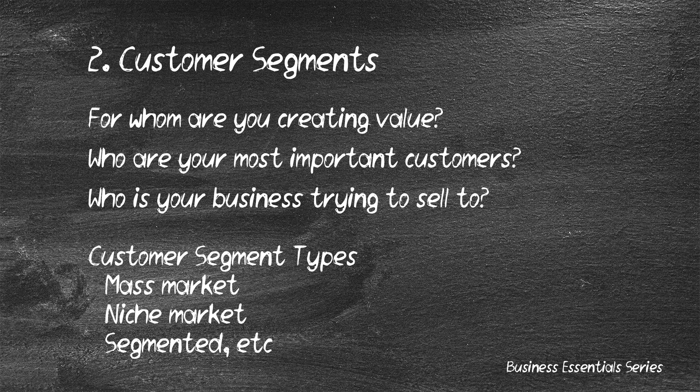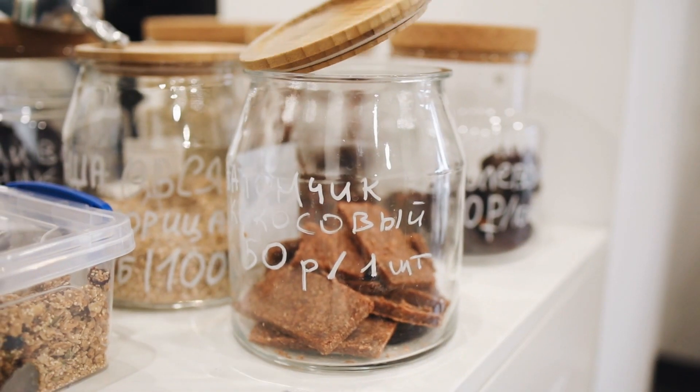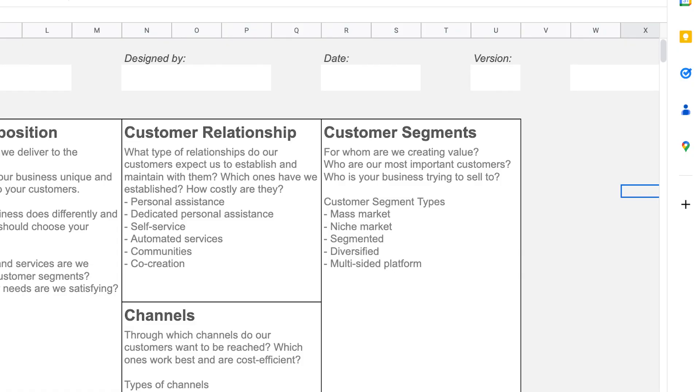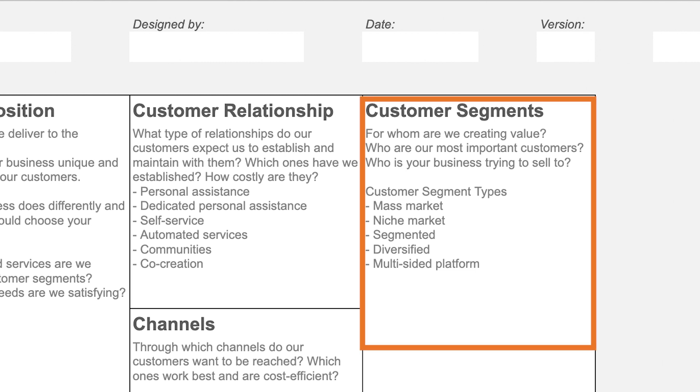The next key element is your customer segment, which simply means who you are delivering this value to — who your products and services are for. We have different customer types: mass market, which is suited for general consumer products targeted at everybody like a food or snack company; niche markets, where your product or service targets a specific group with a common characteristic; segmented; diversified; and so on. Put in here what customer base you are targeting.